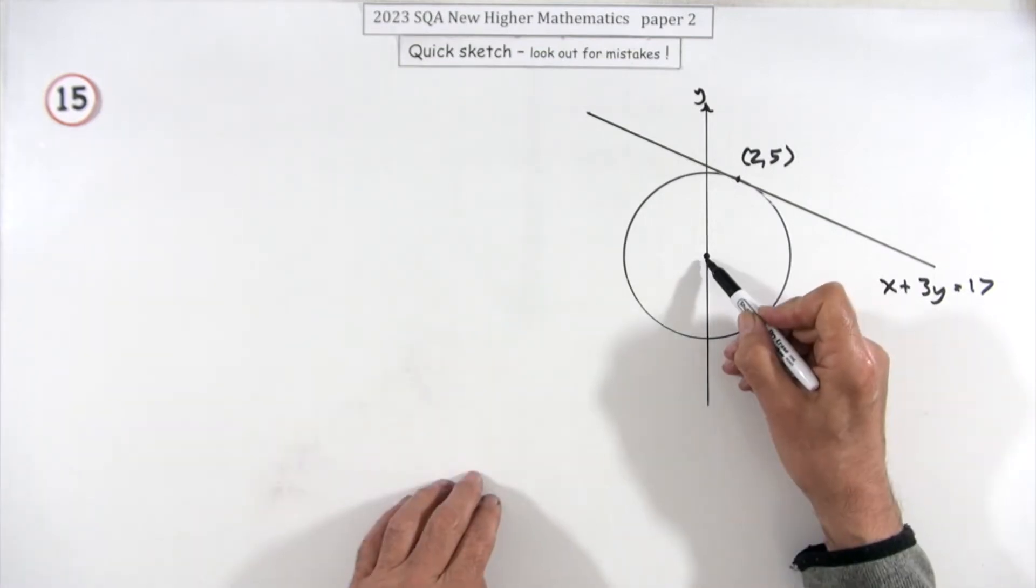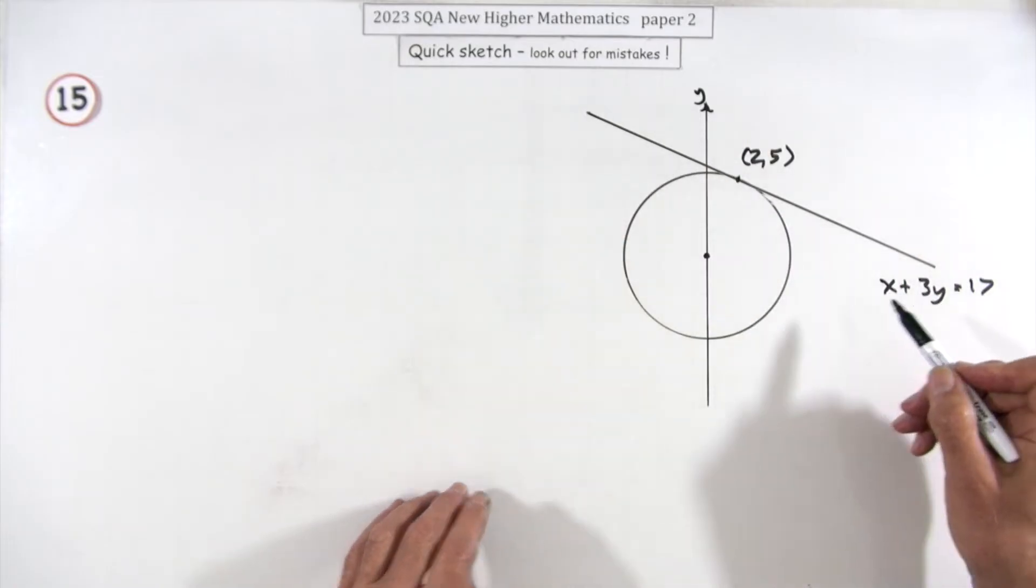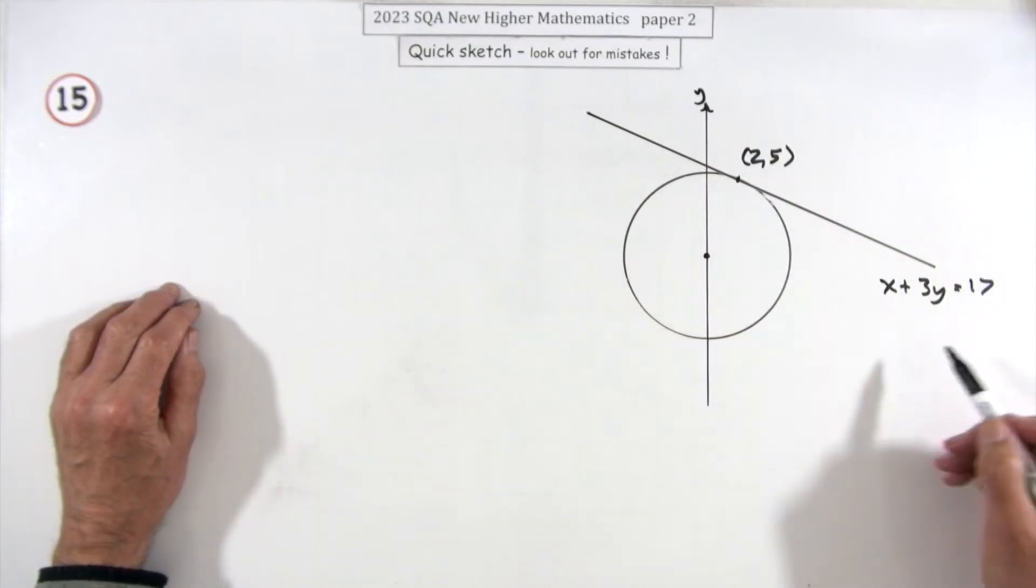So normally you would know the center then get the gradient, then get the gradient of the line, then get the equation. So you're just going to do that backwards. Well, there's the line.